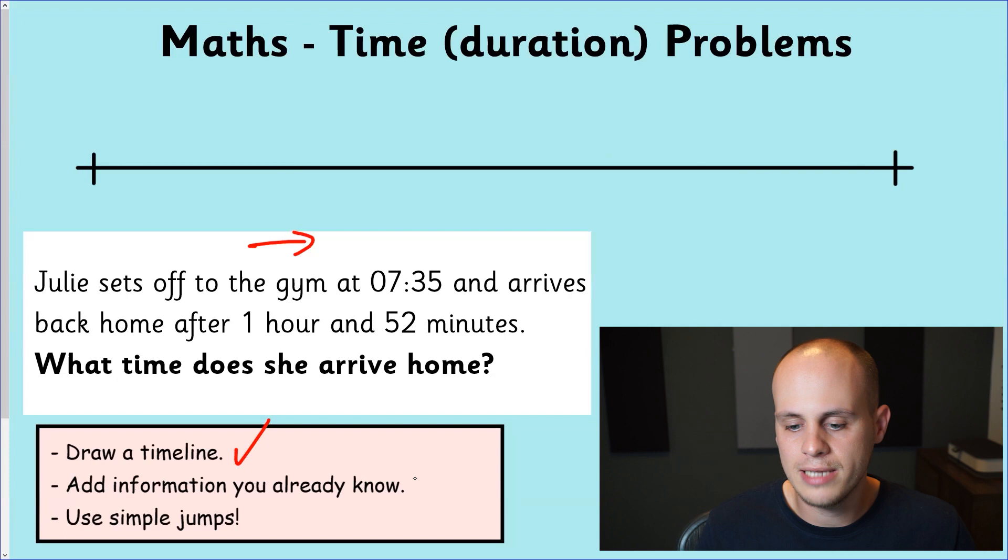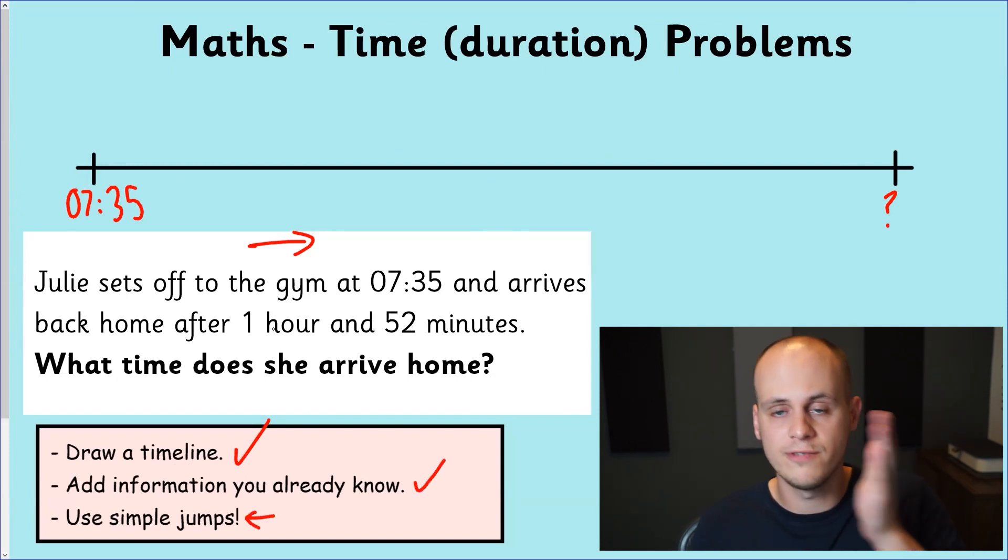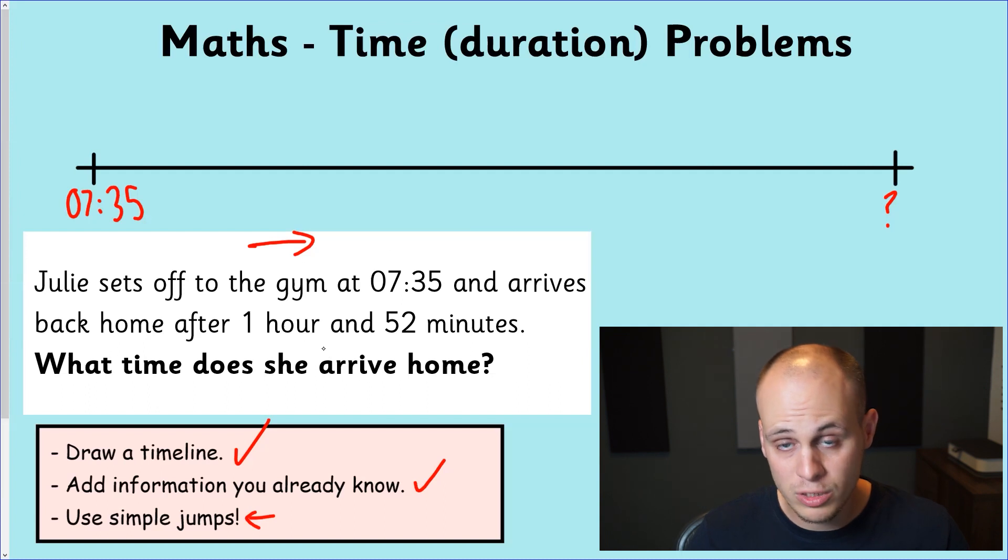The second thing is in this timeline, just add any information that we already know. We know at the beginning of my timeline what time Julie set off to the gym. We don't know, I'm going to mark that with a question mark, what time she got back. But we do know how long she spent outside. So what we're going to do now is use simple jumps to help us find that end time. By simple jumps, I mean don't try and overload yourself of information. Use hours as checkpoints.